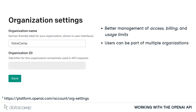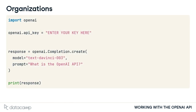Users can be part of multiple organizations and attribute requests to specific organizations for billing. To attribute a request to a specific organization, we only need to add one line of code. Like the API key, the organization ID can be set before the request.